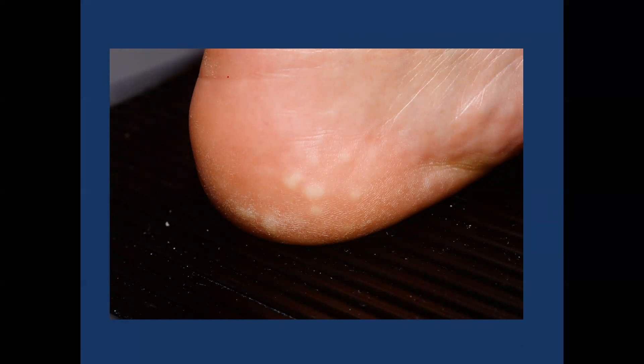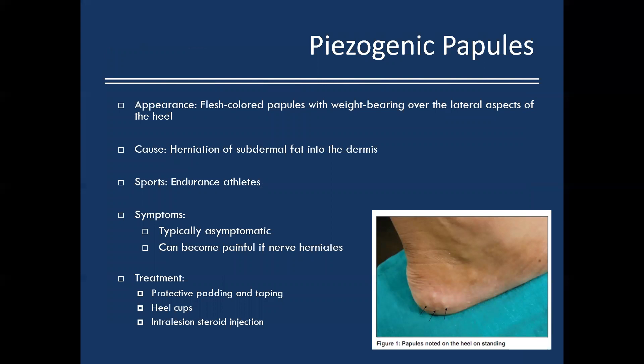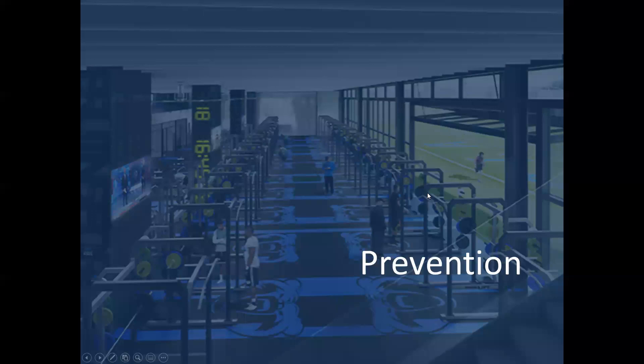Piezogenic papules — flesh-colored papules over the lateral aspects of the heel with weight bearing, caused by herniation of subdermal fat into the dermis. Most commonly seen in endurance athletes. Typically asymptomatic; if painful, it's because superficial nerves herniate through the dermis with the fat. Treatment: protective padding or taping over the heel, heel cups, or intralesional steroid injections if painful to cause fat necrosis and lesion shrinkage.